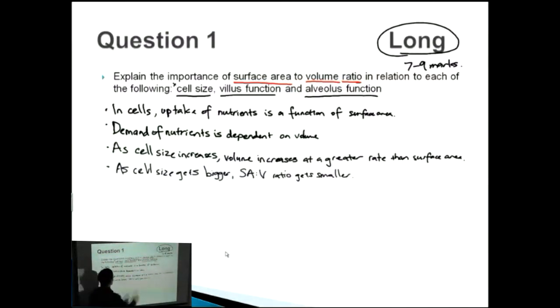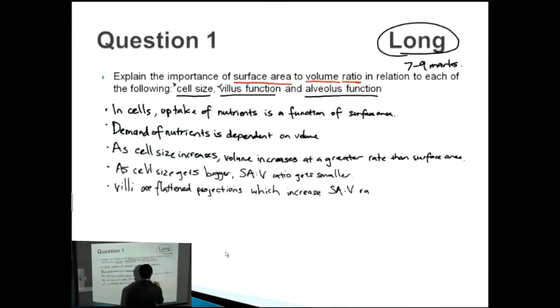That's probably enough about cell size - that's only the first point. Now let's talk about villus function. The villus is the flattened projections inside the small intestine which help with absorption. Villi, which is the plural of villus, are flattened projections which increase surface area to volume ratio, which increases efficiency of absorption.